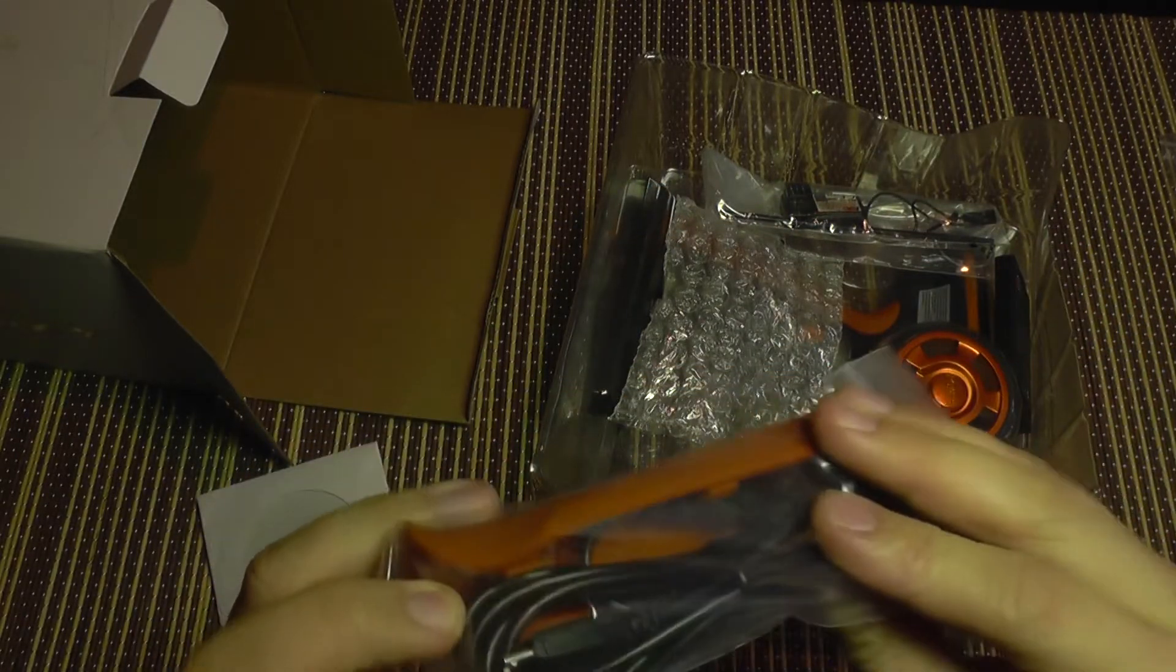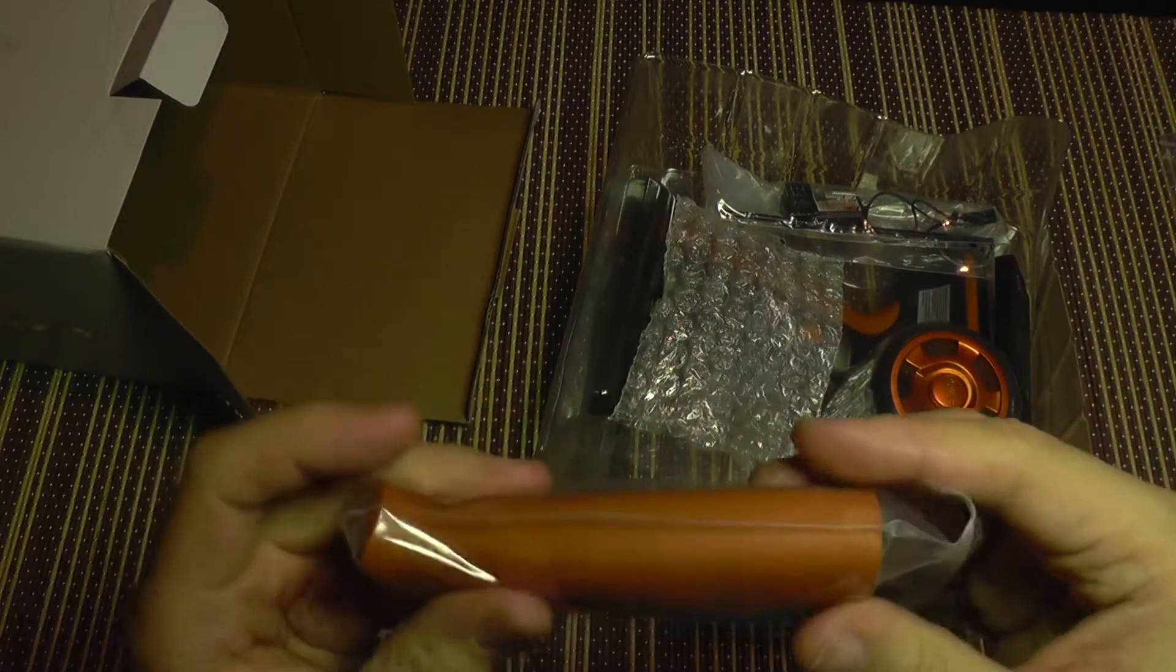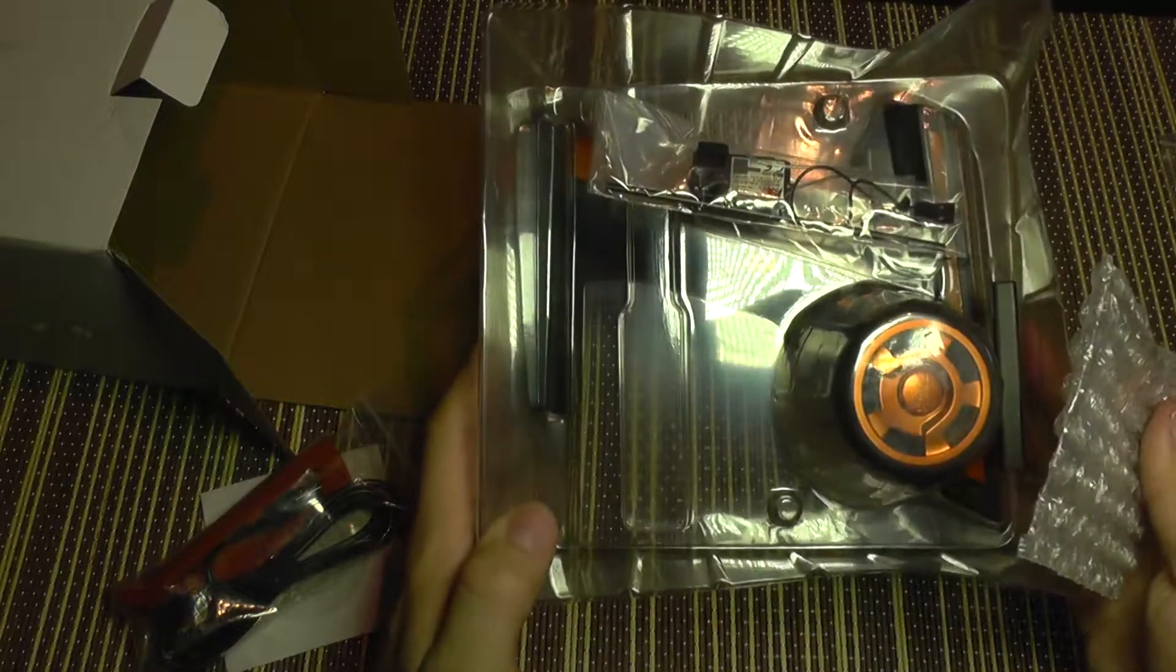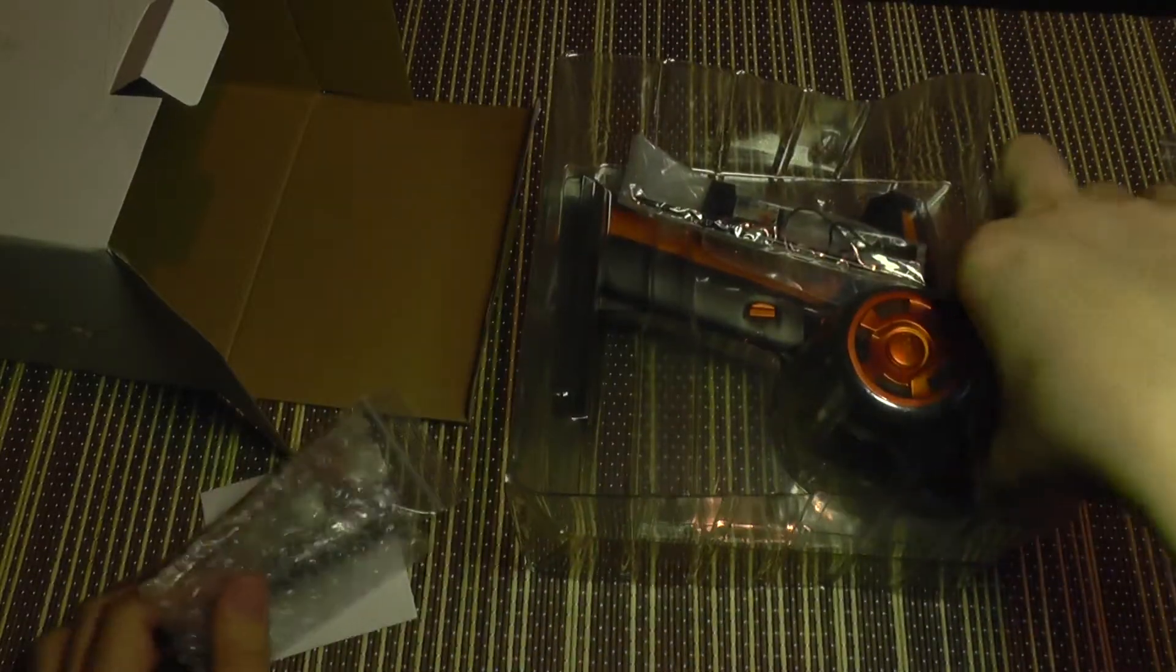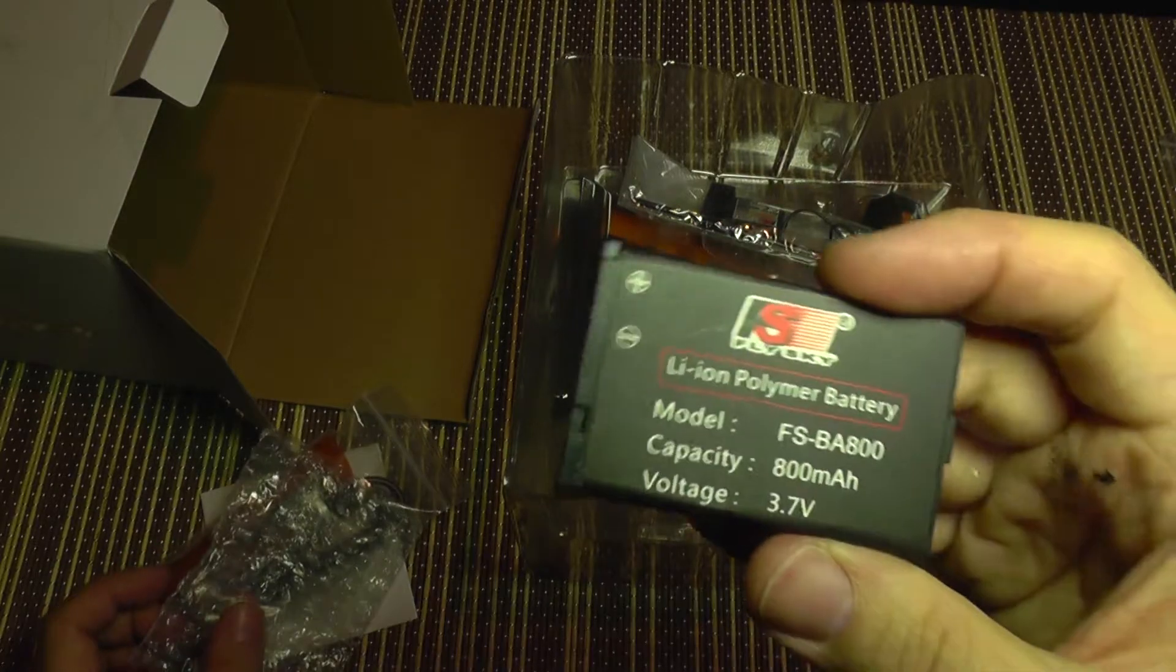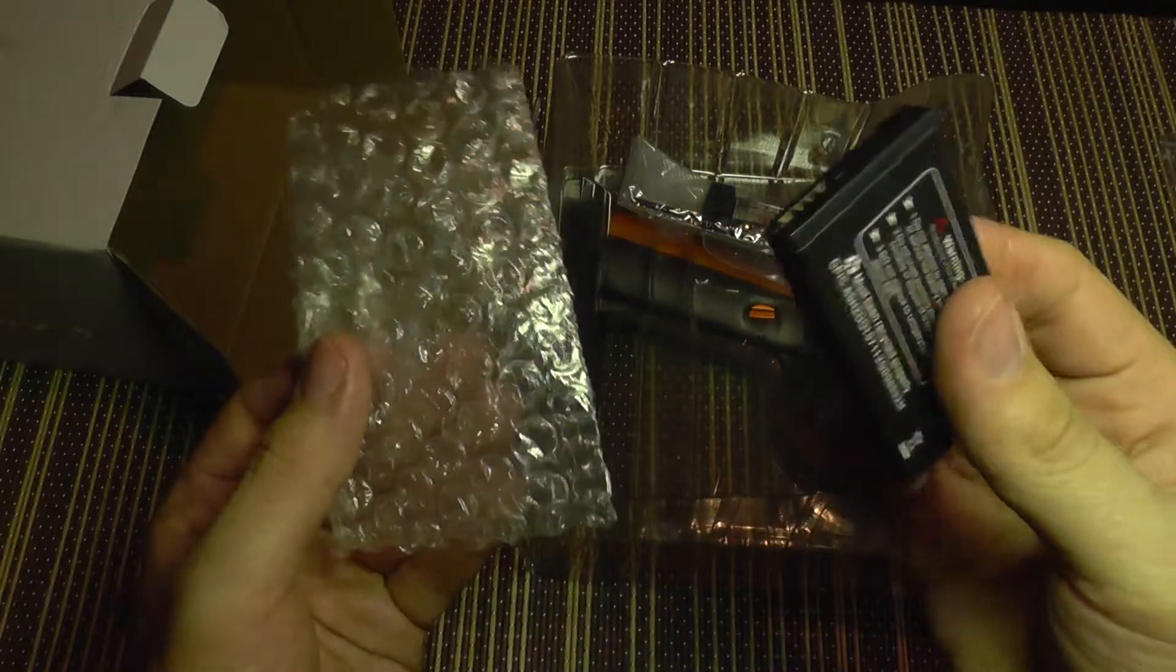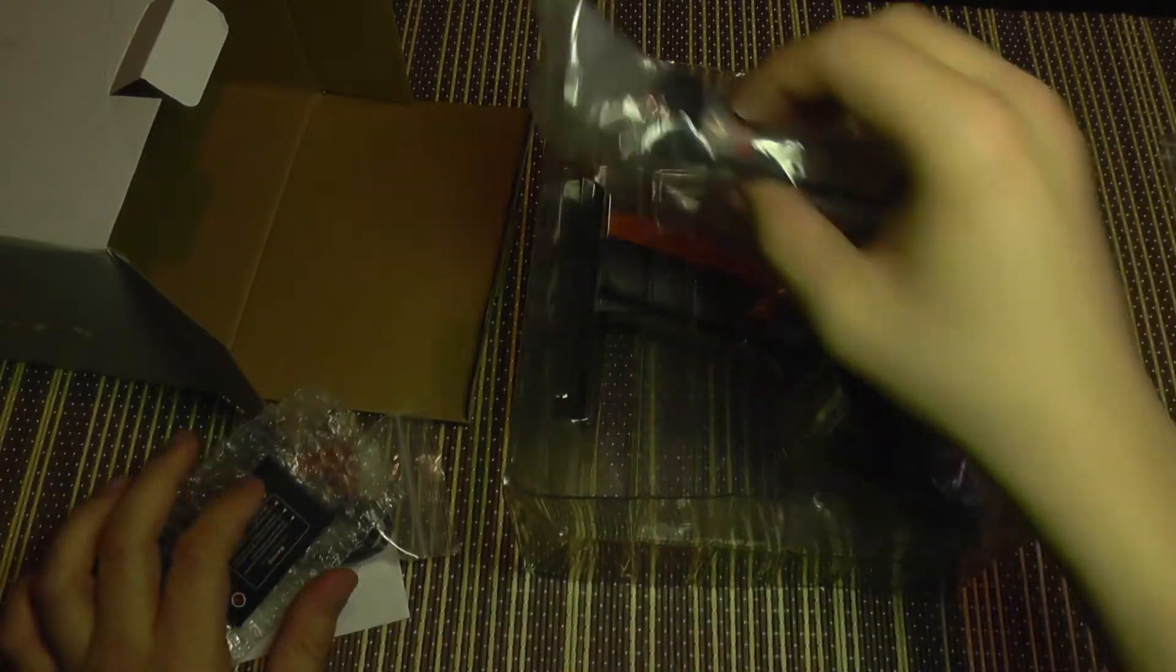It comes with a micro USB cable and a rubber grip, an additional rubber grip because the remote already has one installed. This is the battery. It has a lithium polymer battery. Probably the battery was in this bag but it's no longer in there.